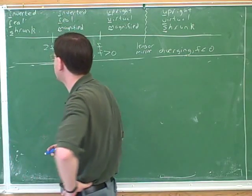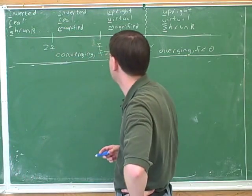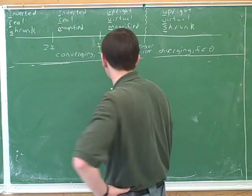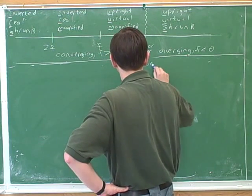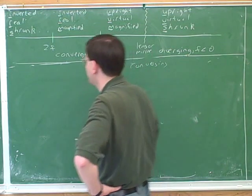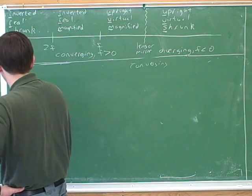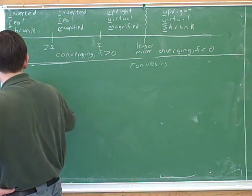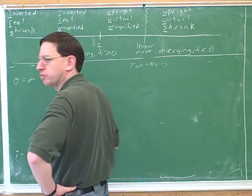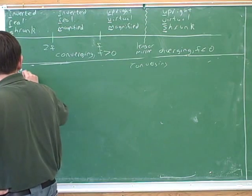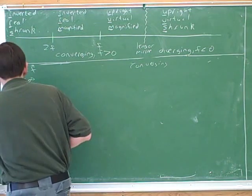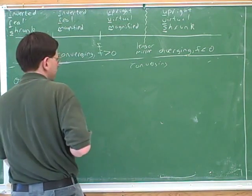There are two special cases we need to be familiar with for a converging device. We already know what happens when the object is at infinity and when the object is at the focal point. Let's start with when the object is at infinity.